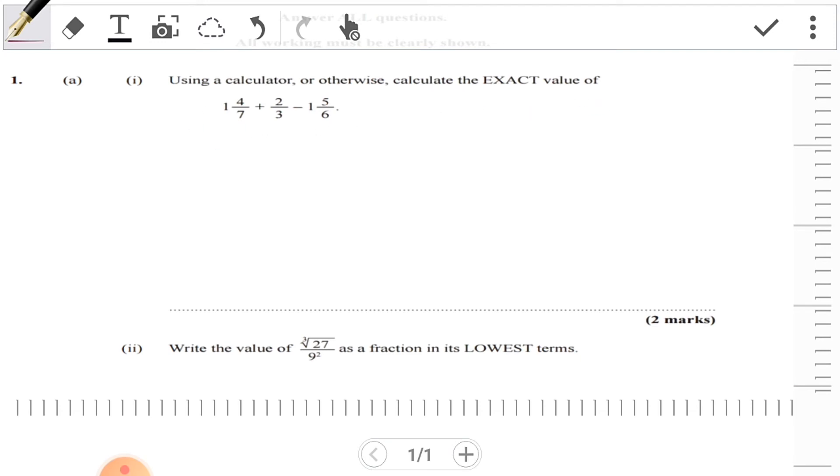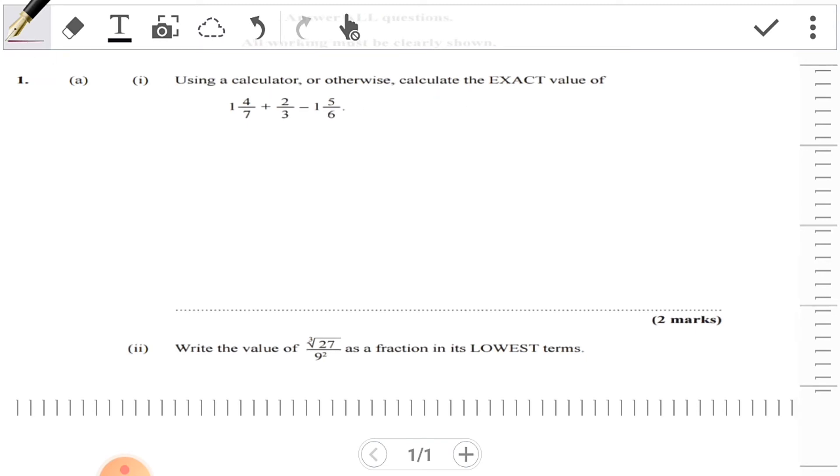Let's say you're not using your calculator - we're doing the 'or otherwise' part. Basically, what we want to do is convert all mixed numbers to improper fractions. So we're going to change 1 and 4/7 and 1 and 5/6 to improper fractions.